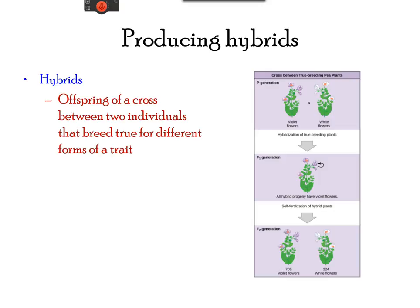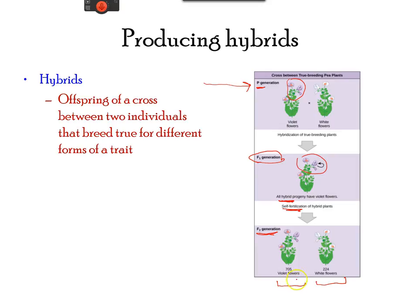Mendel used the first generation as the parental generation, referred to as the P generation. The offspring produced by this generation were called the F1 generation, or first filial generation. This generation was also a hybrid, and the characteristics shown in this generation were considered to be dominant. He then allowed the F1 generation to self-fertilize naturally and produce the F2, or second filial generation. He noticed certain ratios of characteristics present in each generation, which became the postulate for his hypotheses.